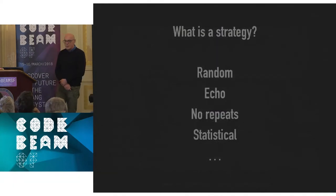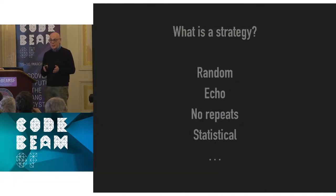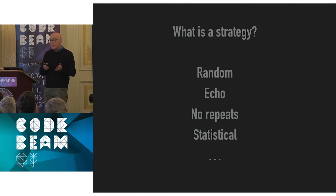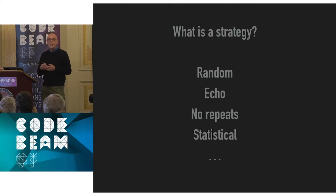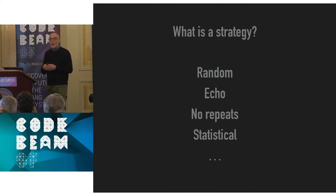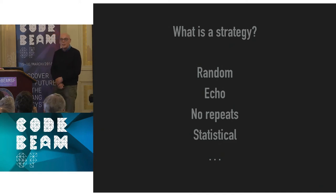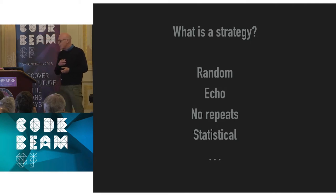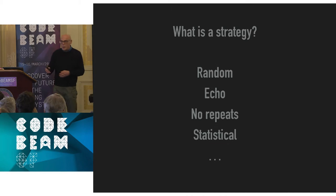Where functions come into rock paper scissors is the idea of a strategy. If you want to model the game, the first thing you think about is how the computer is going to play. There are various strategies: you can make a choice at random, you can echo the opponent's previous play, or there are statistical approaches where you look at how many times your opponent has played rock, paper, or scissors.